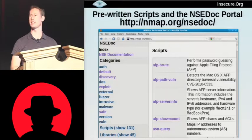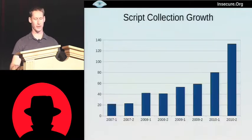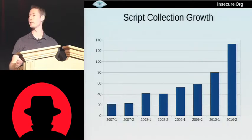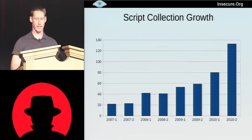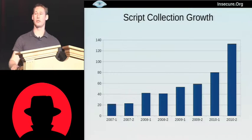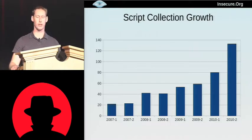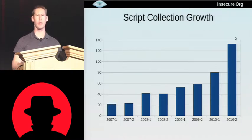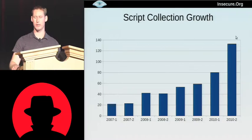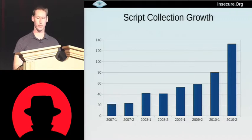The number of scripts has been increasing rapidly. The chart shows the script count on January 1st and July 1st each year. Growth was slow at first while we figured out our review process and infrastructure, but lately it's been growing much faster. Even though we've been working on NSE for four years, in the last year it has more than doubled in scripts, and I won't be surprised if it doubles again by next Black Hat.